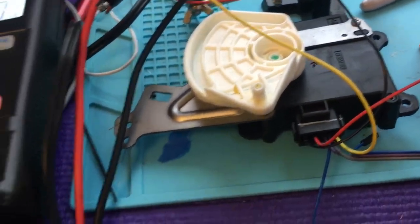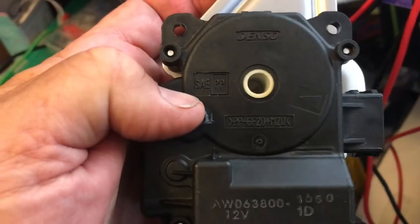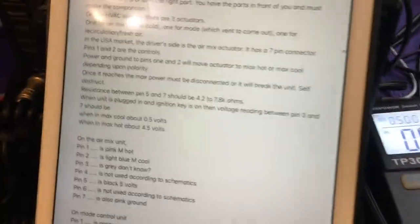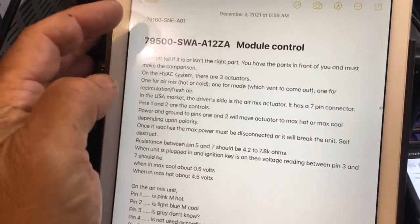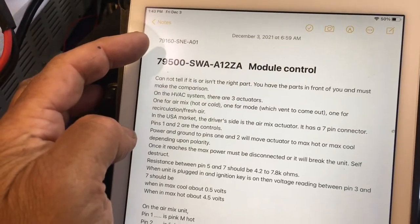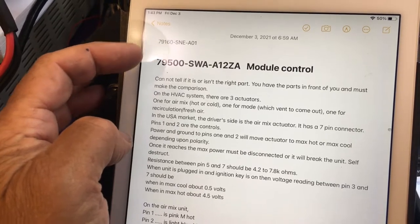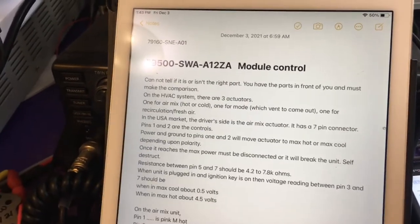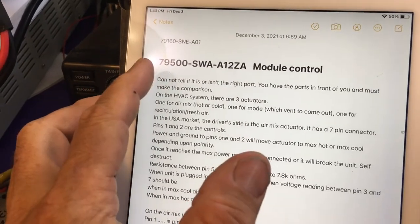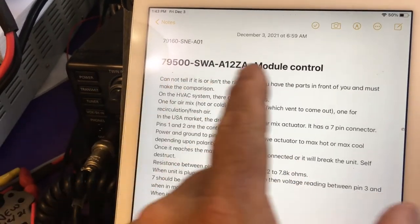So how do you bench test this? Well here's the instructions. Again we're using this unit, here's the OEM part number. This is for a 2011 Honda CRV and this is the part number of the control module.